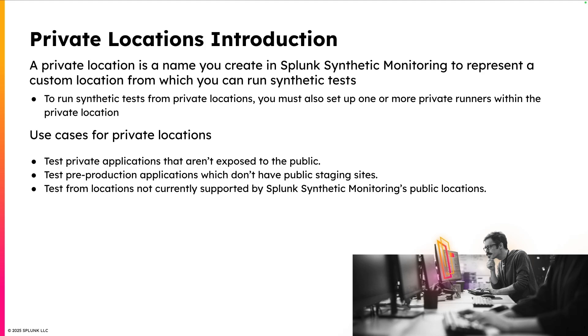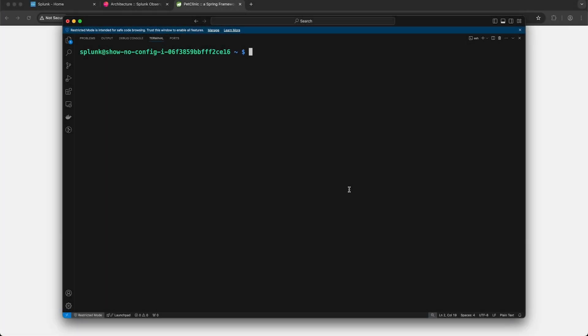Now that we know what private locations are, let's see a demonstration of how to deploy a private runner to a Kubernetes environment and create a simple synthetic monitoring test. The first thing I want to show you is the test target and the environment in which it's running. I'm currently logged into a virtual machine that's running a K3S cluster, and I've deployed to that cluster a Java application called the Pet Clinic that is composed of microservices.